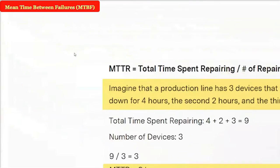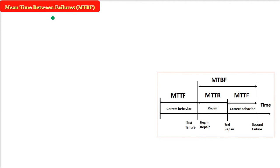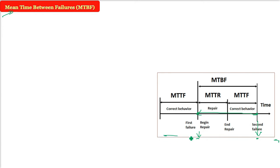Mean Time Between Failure, MTBF — it is a mean, so you take the average. Once a failure happens, you repair it, the system behaves correctly, and then there will be another failure. The time between two failures is the mean time between failure. One failure, second failure — the time elapsed between these two failures is the time between failures. We take many such values, add them, divide by the count, and that gives MTBF.